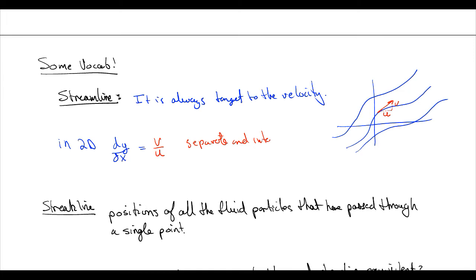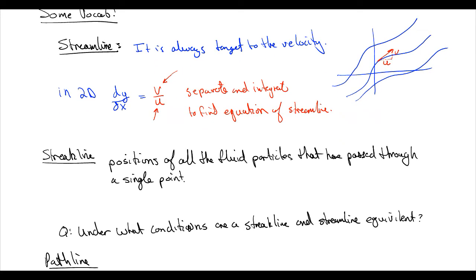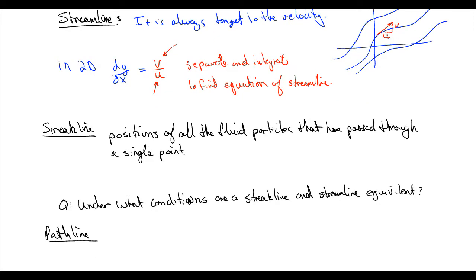In some cases we can separate and integrate to find the equation of a streamline. This requires a mathematical expression for both the vertical velocity v and the horizontal velocity u. If we have those expressions, we can sometimes separate and integrate. A streamline is a mathematical construct, really useful when you have expressions for velocity as a function of position and time, like you'd get from a CFD program or by solving the Navier-Stokes equations.